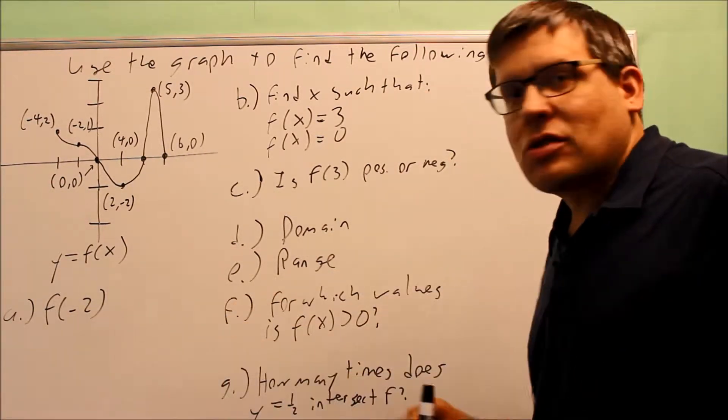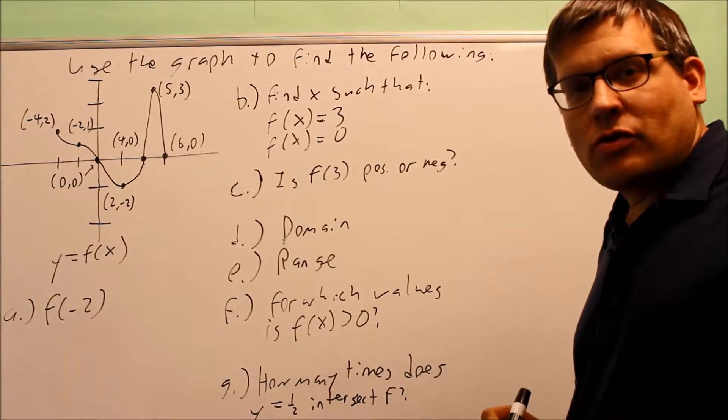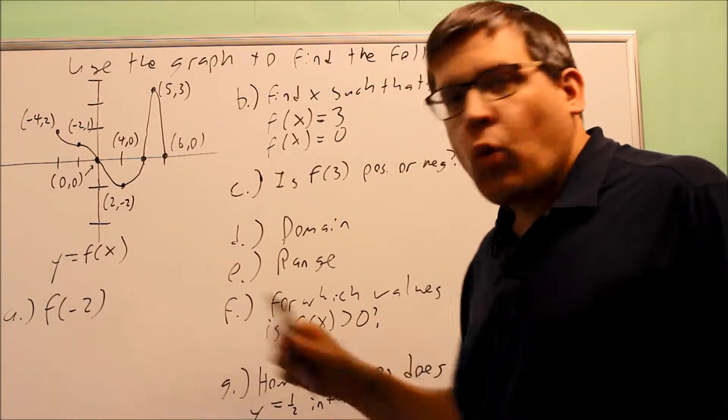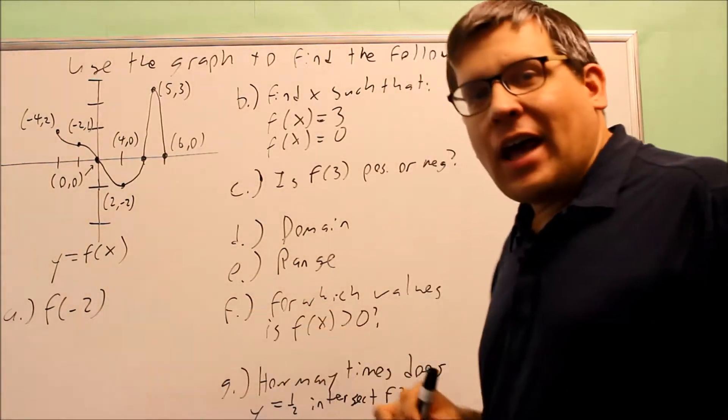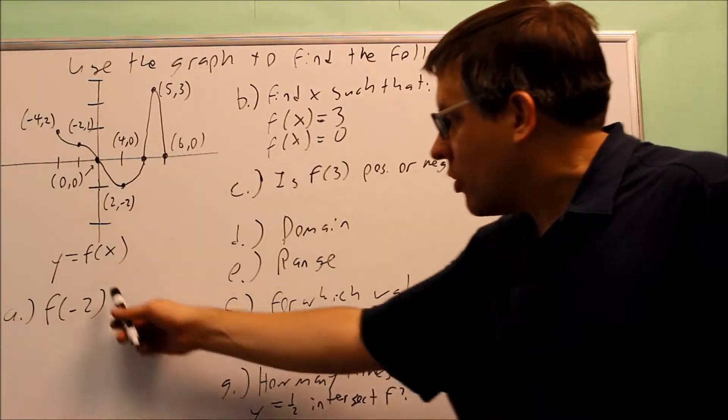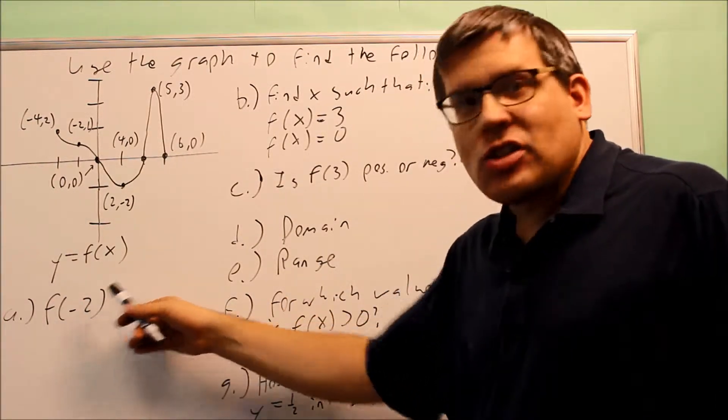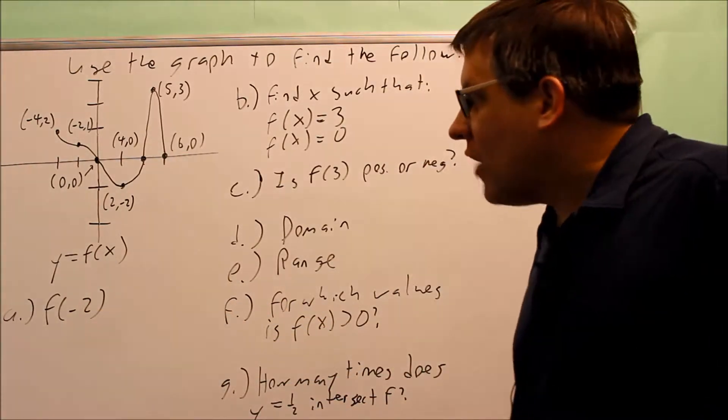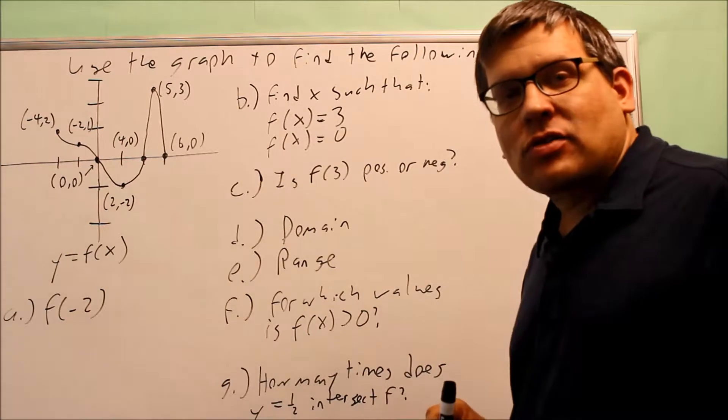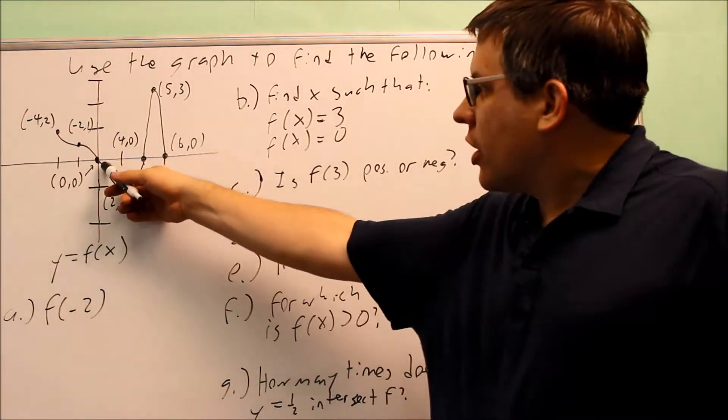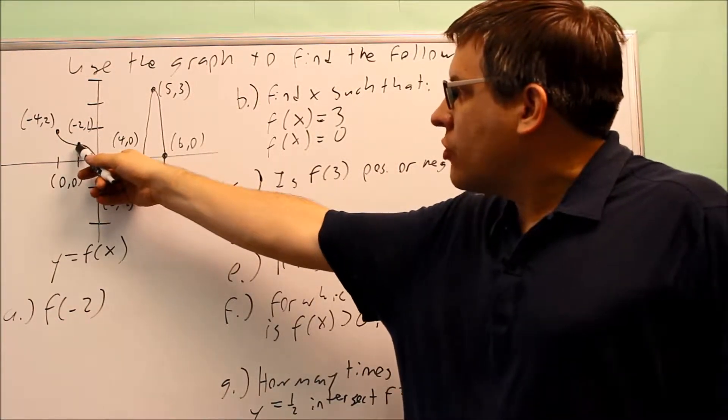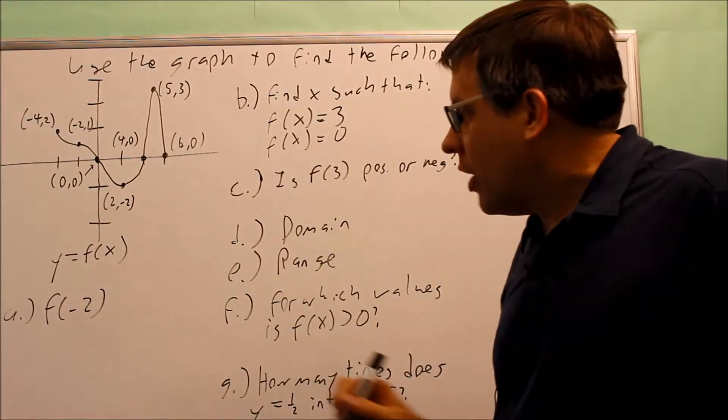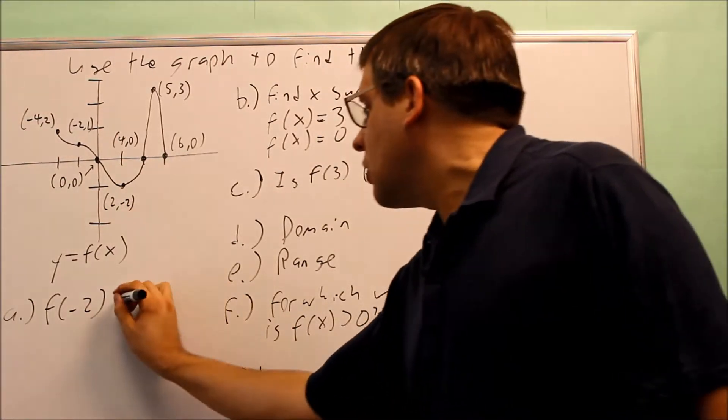The first one asks us to find f(-2). This is asking you to indicate what y value you get when x is -2. By definition, f(x) = y, so when x is -2, what y value do you get? To do that, look at the graph and go to the -2 point. At x = -2, you're at y = 1, which means the answer is 1.